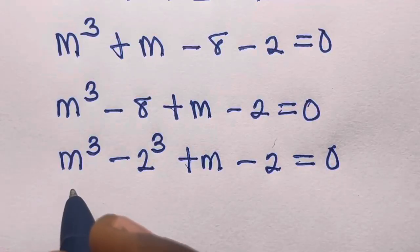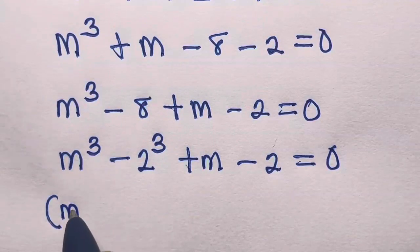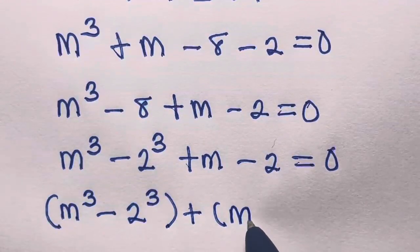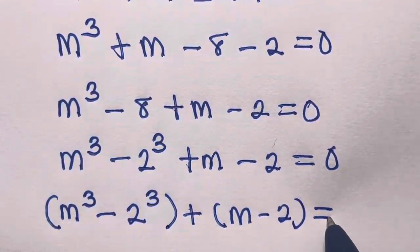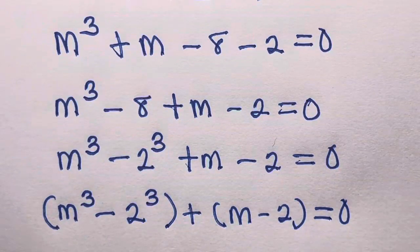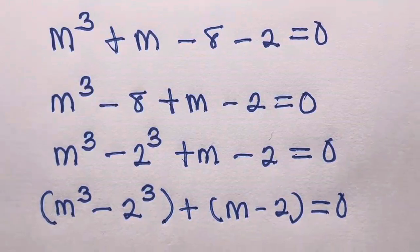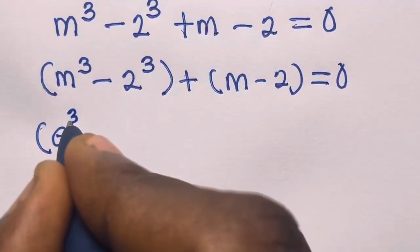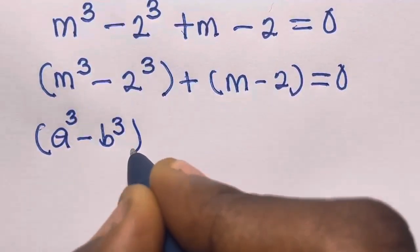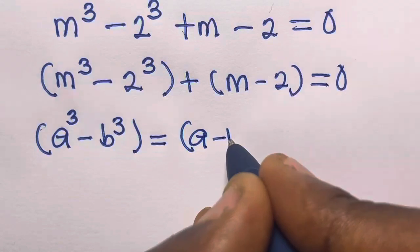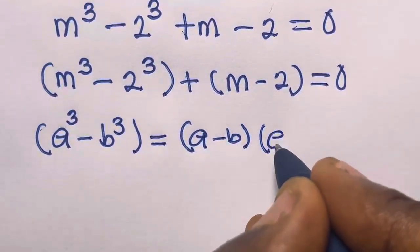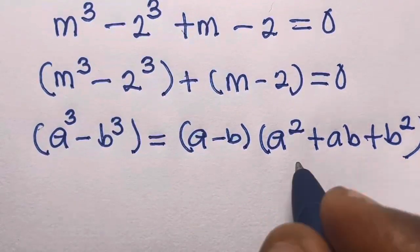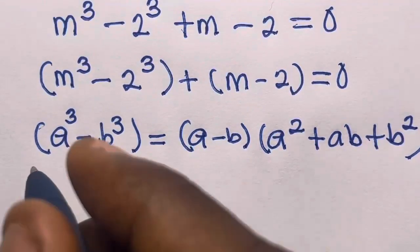Let's recall that if you have a cubed minus b cubed, this equals a minus b times a squared plus ab plus b squared. We will apply this identity to our expression.